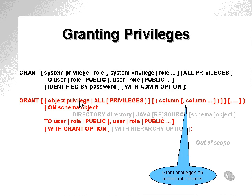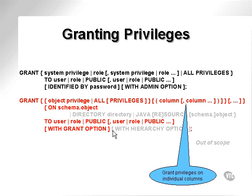The object privilege grant command section is now highlighted. The object privilege version of the grant command is fairly similar to the system privilege, apart from the fact that an object privilege is granted onto a list of columns in a table — column, comma, column — on a schema object or schema table. Also, as opposed to being with admin option, it's now with grant option. Admin implies administration for a system privilege. With grant option implies it can be granted to someone else. So if one user is granted select privilege on a table to another user with the grant option, then that second user can, in turn, grant that same privilege on that same table to yet another user, and so on.